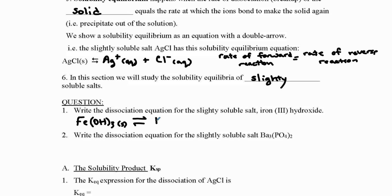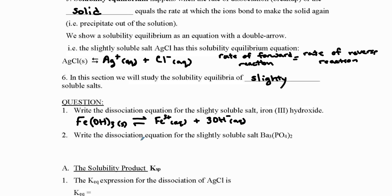Iron(III) hydroxide is a solid that we're adding to water to partially dissolve. We write the double arrow, and it breaks apart into Fe³⁺ (aqueous) — always remember to include the charge and that it's aqueous. Make sure it's balanced: because there's a 3, there are 3 hydroxide ions, each with a negative charge. That's what the dissociation equation looks like.